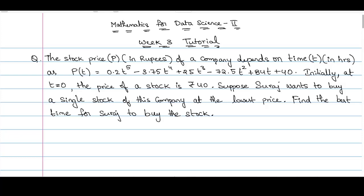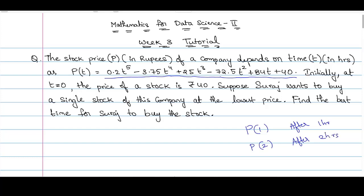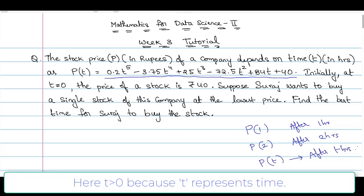The stock price P of a company depends on time t as P(t) = 0.2t⁵ − 3.75t⁴ + 25t³ − 72.5t² + 84t + 4t. This means that P(1) is the price of the stock after 1 hour and P(2) is the price of the stock after 2 hours. Initially, at t = 0, the price of the stock is Rs. 40.